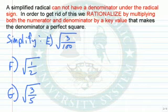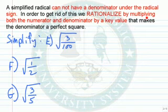The next part is simplifying a radical — we cannot have a denominator under the radical sign. In order to get rid of this, we rationalize by multiplying both the numerator and denominator by a key value that makes the denominator a perfect square.